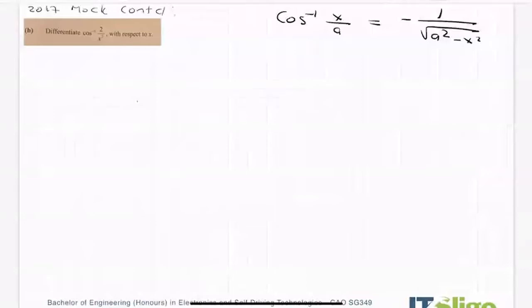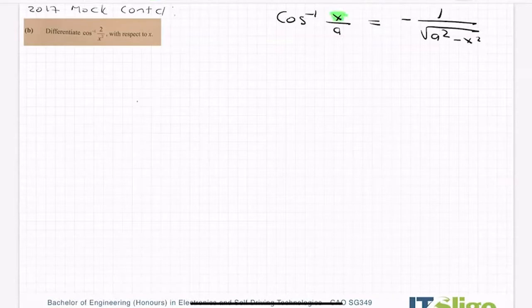Okay, so how do I use it? Well, x is the number on top and a is always a number on the bottom. And the a squared goes in here and the x goes in here. Right, so let's have a look at the one we have.